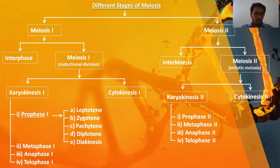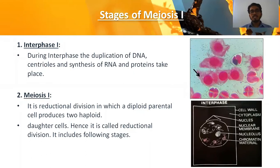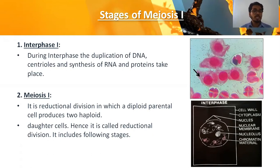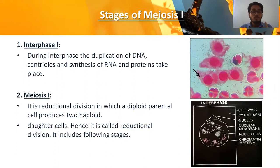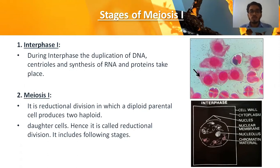The first step is interphase, also called the preparatory phase. It was earlier assumed to be a resting stage, but it is not — it is a preparatory phase because the cell prepares itself for the next cell division. During this phase, all required contents — DNA, centrioles, certain RNA, and proteins — are duplicated. Once interphase is done, it enters the M phase, also called meiosis one phase.